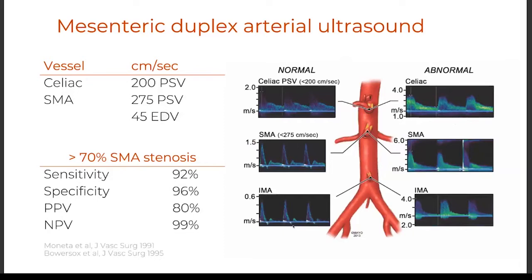Screening of these patients starts usually with a mesenteric duplex ultrasound. The classic velocities established by Moneta in a prospective study in the early 1990s were a celiac axis peak systolic velocity of 200 cm/s and SMA greater than 275 cm/s. The Bowersox criteria established by the Dartmouth group added an end-diastolic velocity of 45 cm/s. The sensitivity for greater than 70% stenosis is 92%, specificity 96% — so that should be the starting test.